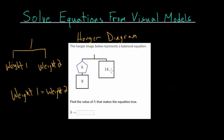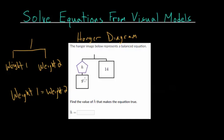From this we can set up an equation. On the right-hand side there's a weight of 14 — in pounds, kilograms, or whatever unit you prefer. On the left there are two different weights: a weight of 9 and a weight of h. The weight on the left must equal the weight on the right, so we combine h plus 9 and set that equal to 14.